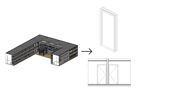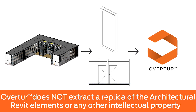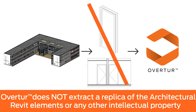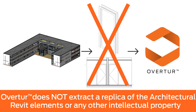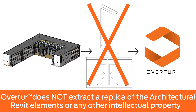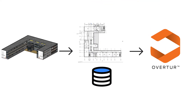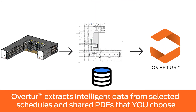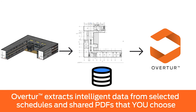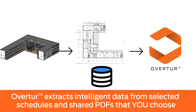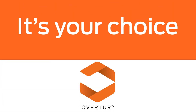Overture does not extract a copy of the 3D content in the model or any of your 3D intellectual property — that's yours. However, Overture does focus on the plan data and the schedule data, bringing them all together within Overture for all to use. You choose what plans and data are shared. It's your choice.